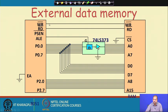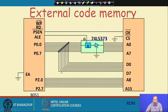For external data memory access: write bar is connected to write bar, read bar is connected to read bar; PSEN bar is not necessary and not shown. ALE signal is connected to G. EA bar is connected to ground, meaning this is an external memory access. In the previous case also EA bar was grounded because we were doing external memory access — in both cases for external memory the EA bar is grounded.